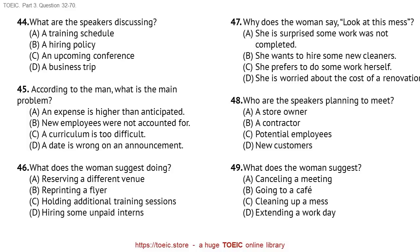Questions 47 through 49 refer to the following conversation. Oh, no. Michael, look at this mess. I was hoping the contractor would have all the work finished by now. I know. We can't possibly invite our new clients into the office with all this stuff lying everywhere. We don't want to make a bad first impression. You know, there's a great Italian coffeehouse across the street. Maybe we should meet them in the lobby and take them there for the meeting. Good idea. I've heard the coffeehouse serves excellent desserts, too. Number 47. Why does the woman say, 'Look at this mess!'? Number 48. Who are the speakers planning to meet?